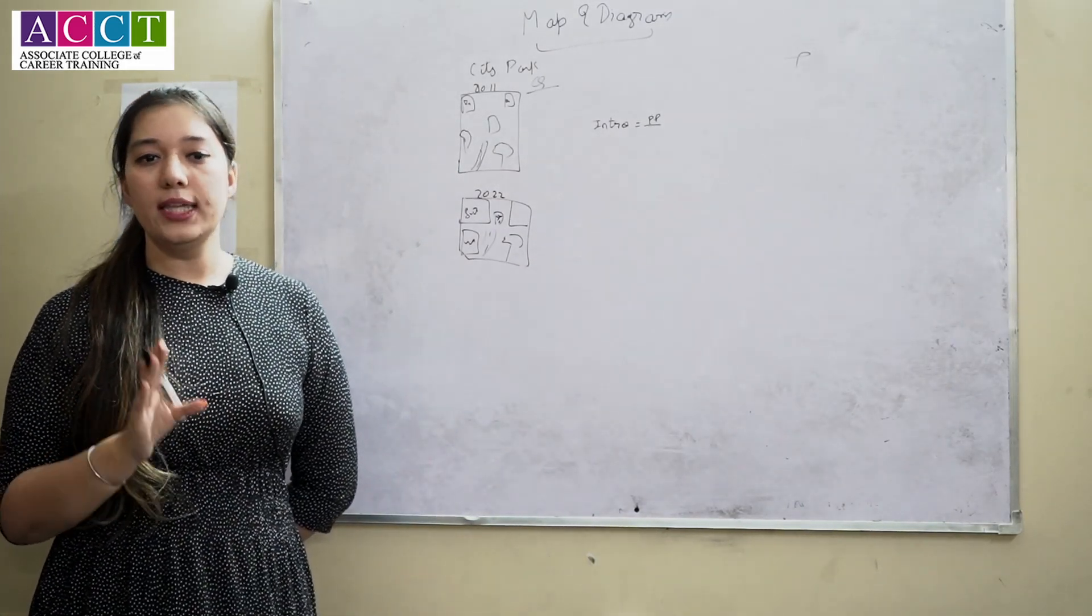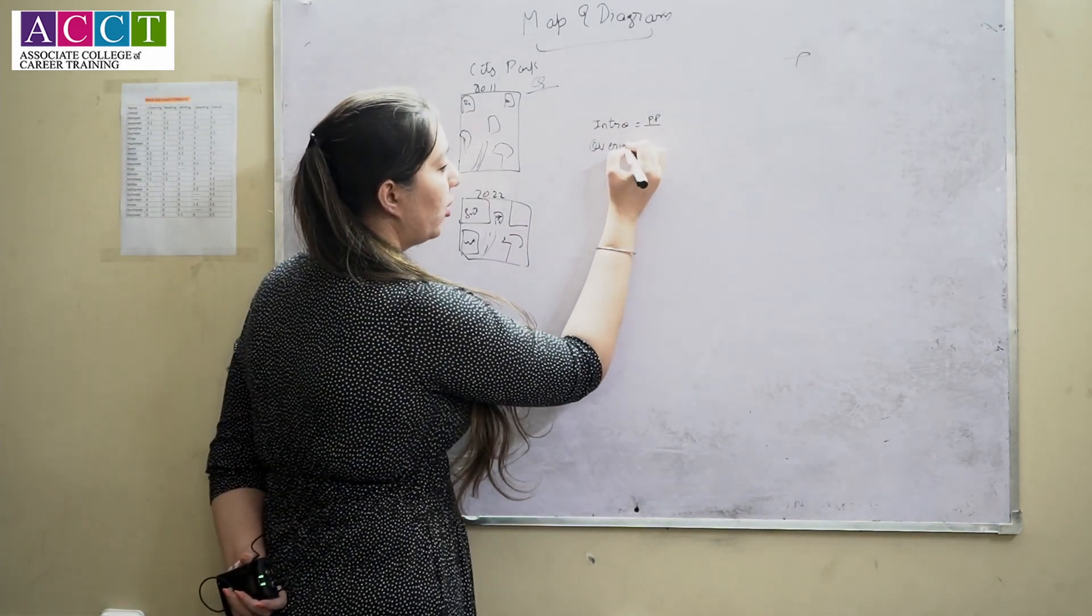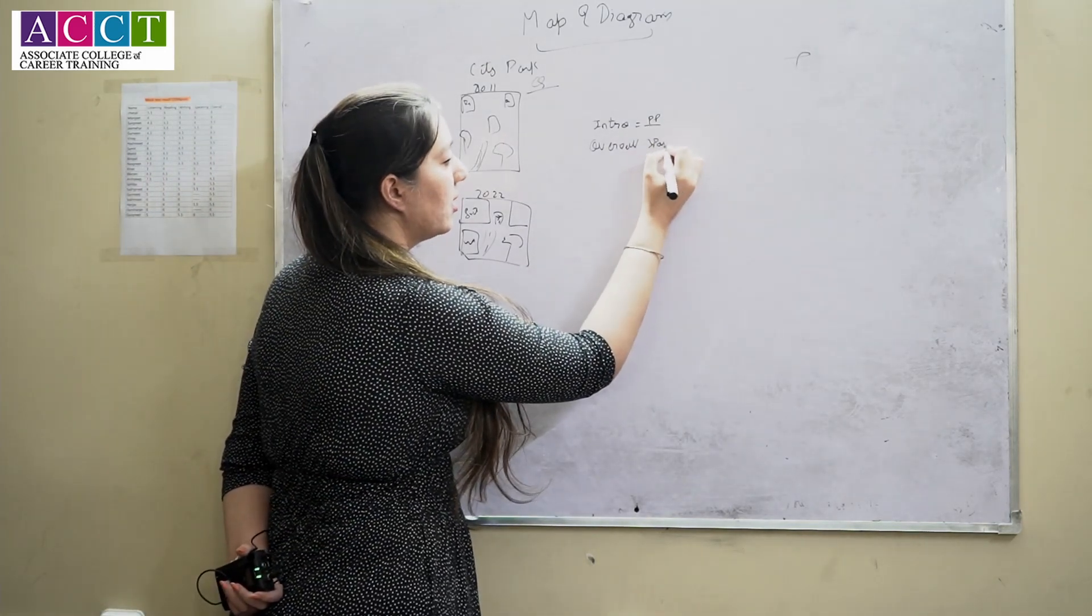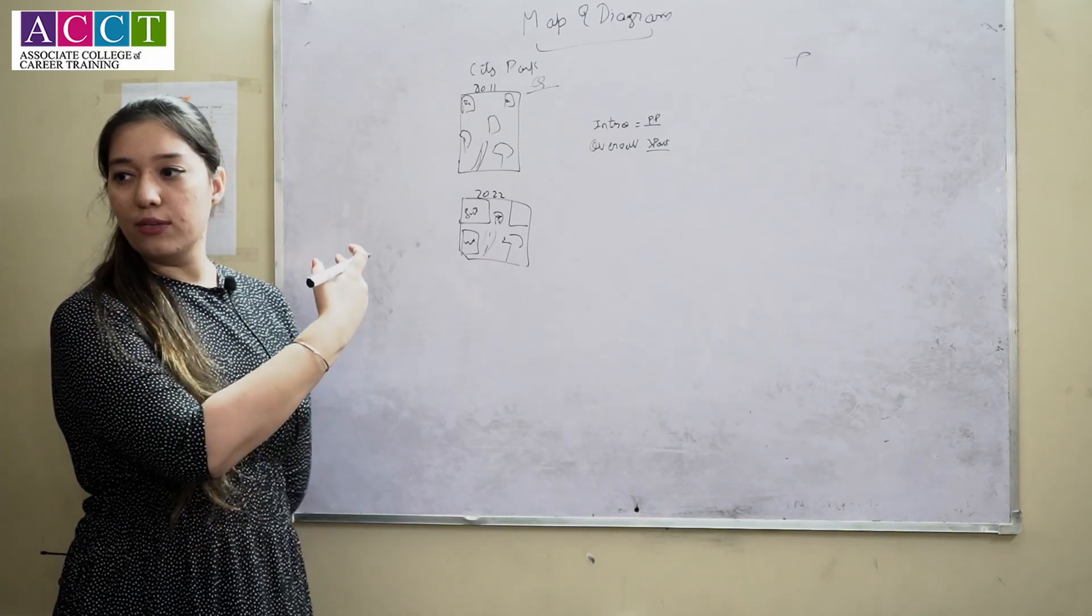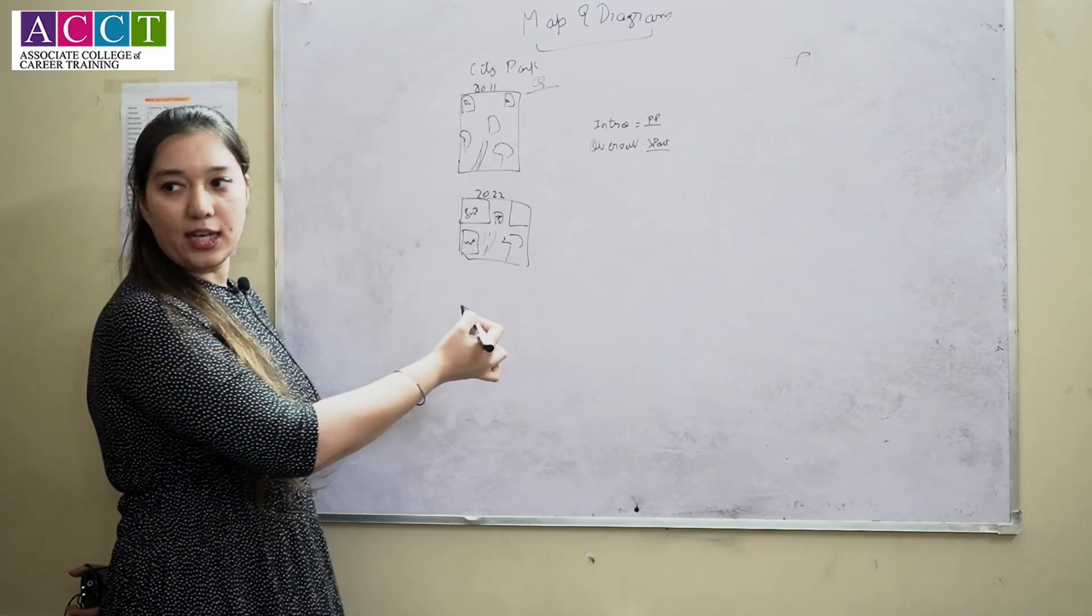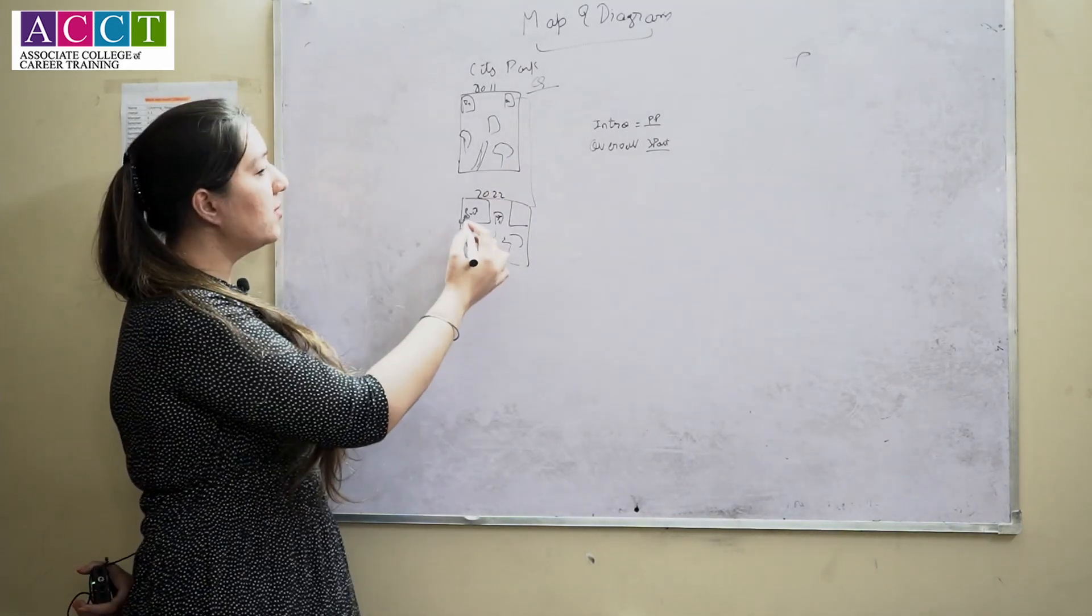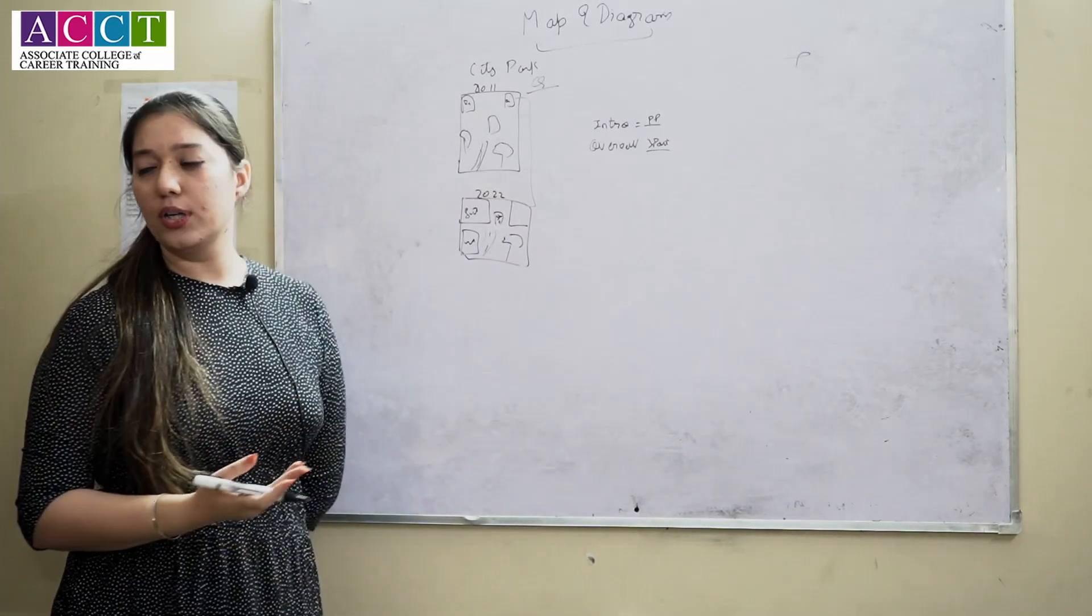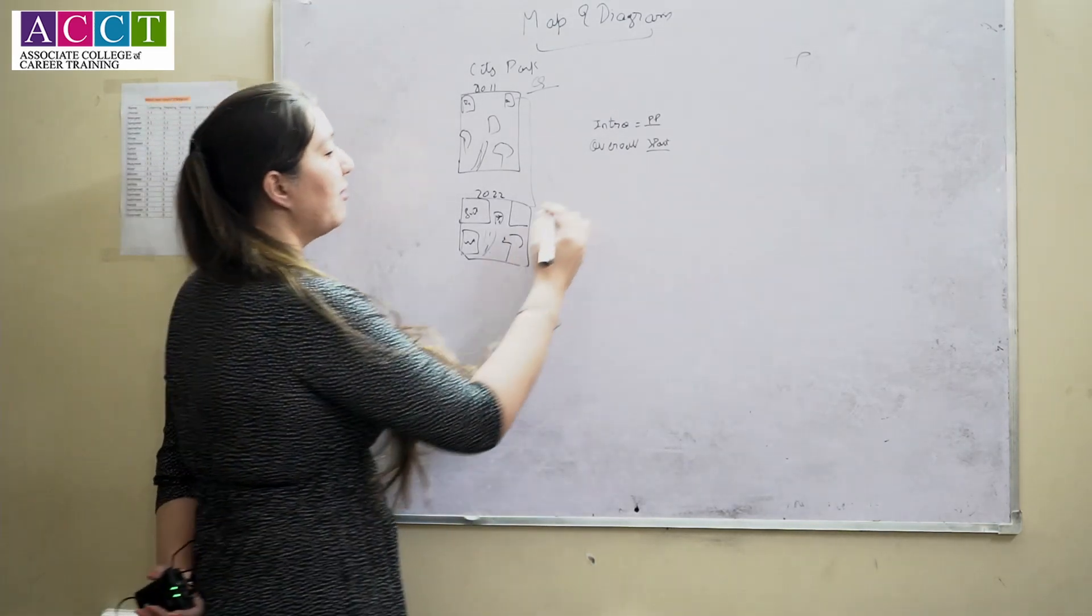After that you have to write the overall. In overall again you have to write the three points. So we can write the points according to what are the differences. For example, the road is untouched, however the building block is increased as well as there is a development of shopping mall, or if you want you can write according to the facilities provided in the ground. So overall is completed.